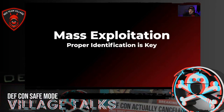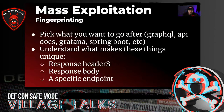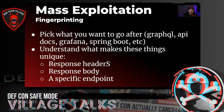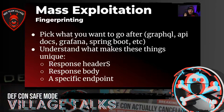Fingerprinting is very, very important. You have to know how to identify these things properly. First, understand what you want to go after. We heavily focused on API docs because APIs can be huge — 50 endpoints where you already know how to use them. Spring Boot stuff is really easy if they've left a heap dump behind. But you have to understand what makes these things unique: is it something in the response header, the response body, a specific endpoint, or a keyword that obviously identifies a particular application?